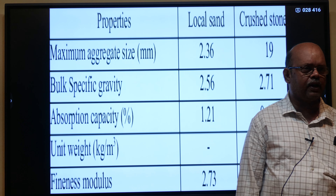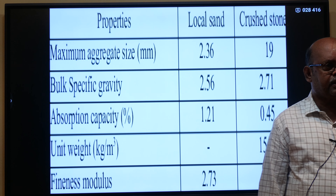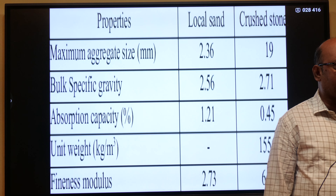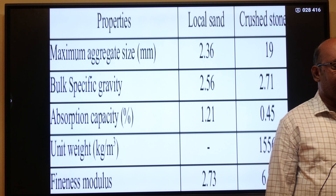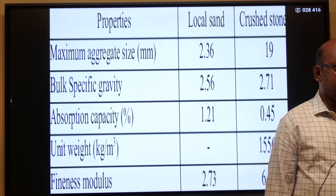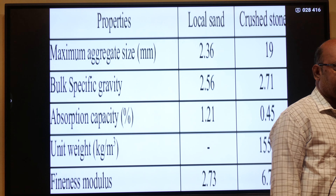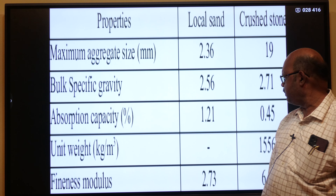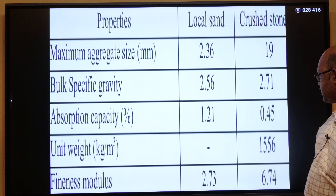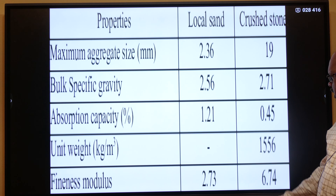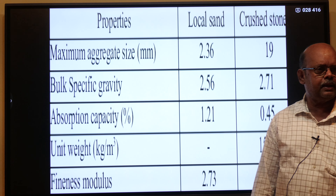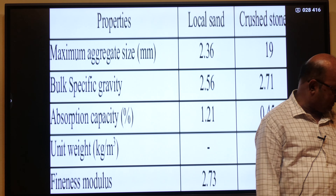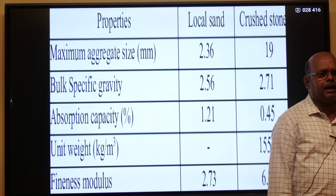The properties of coarse aggregate involve shape, size, and surface texture. Specific gravity is 2.36 for sand and 19 for coarse stone. Specific gravity is 2.56 for sand and 2.71 for coarse stone. Absorption capacity is 1.21 percent for sand and 0.45 percent for coarse stone. Unit weight and fineness modulus are 2.73 and 6.74 respectively. These are the basic properties of fine aggregate and coarse aggregate.